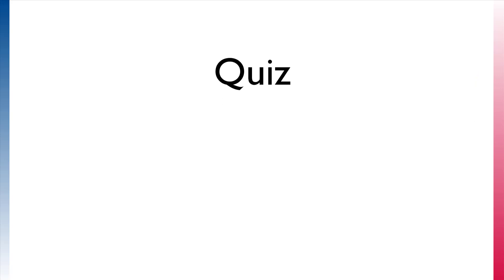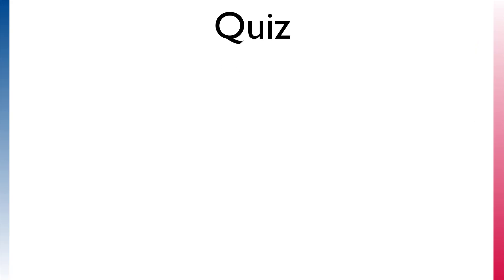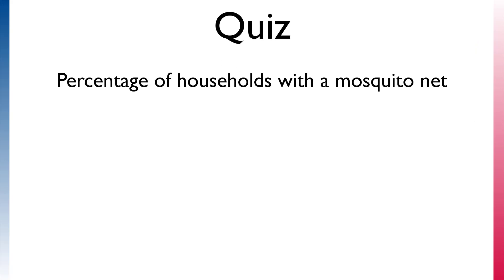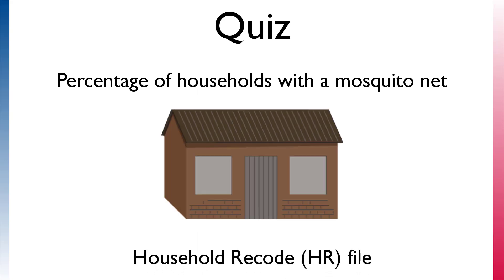So let's try a little quiz. Which file would you use to examine the percentage of households with a mosquito net? The answer is the HR file, since the unit of analysis is a household.